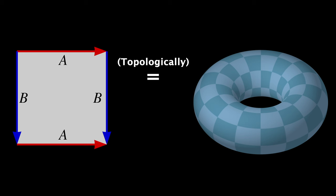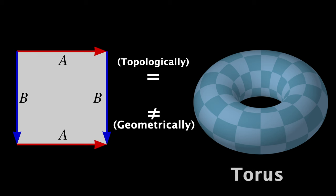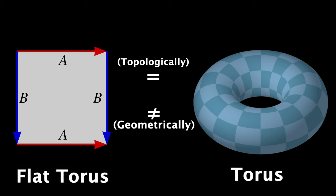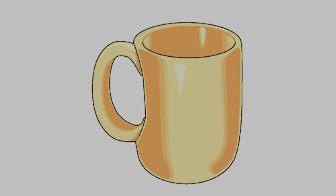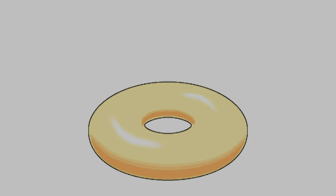These are not the same geometrically, though. Geometry is concerned with things that change when you deform and morph an object, like angles, lengths, areas, curvatures, and so on. Since the torus is curved, and the object on the left — known as a flat torus — is not, they have different geometries. But their topologies are the same, because topology doesn't care about smooth deformations. It only cares about poking holes or tearing the surface.